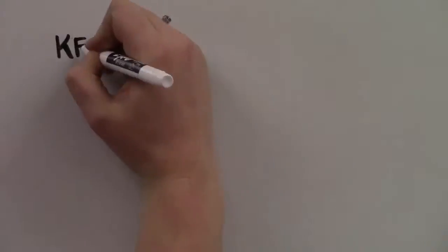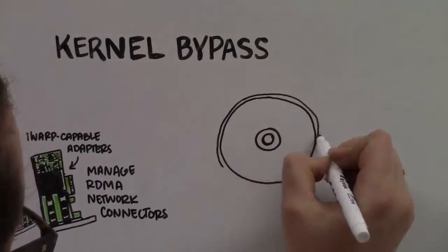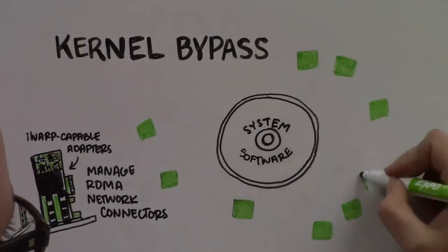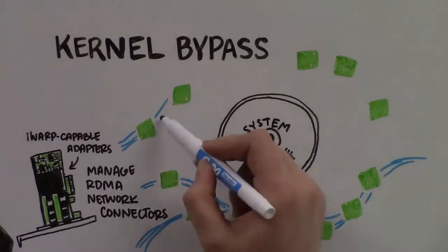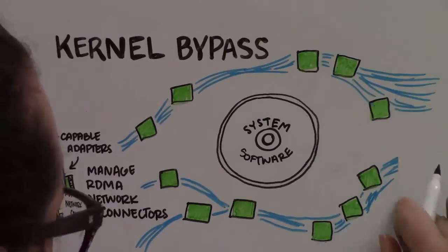iWARP RDMA provides a different approach. Kernel bypass lets iWARP-capable adapters manage the RDMA network connections, avoiding the system software as much as possible. iWARP itself does the connection management between the source and destination by establishing queue pairs between them.